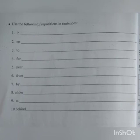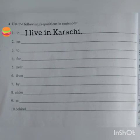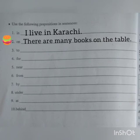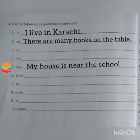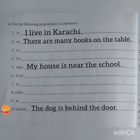सबसे पहले है in. तो हम ऐसा sentence बनाएंगे जिसमें in use होता हो. So the first sentence we are going to make is: I live in Karachi. मैं कराची में रहती हूँ. Number 2 है on: There are many books on the table. मेज पर बहुत सी किताबें हैं. Number 5, near: My house is near the school. मेरा घर स्कूल के करीब है. Number 10, behind: The dog is behind the door. Dog door के पीछे है.